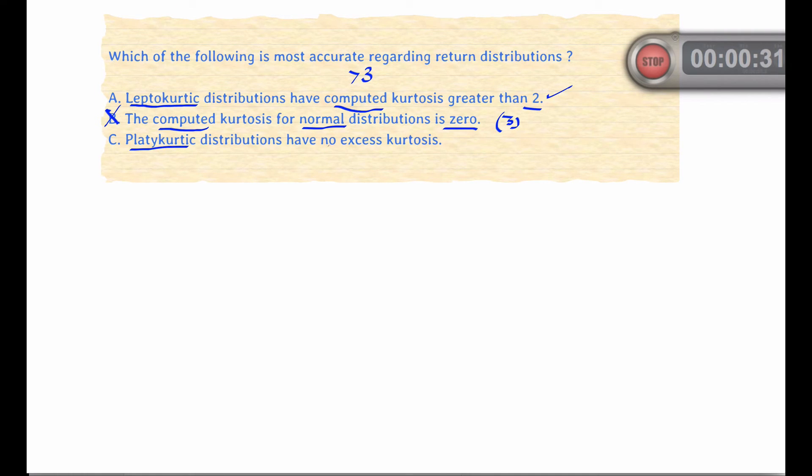And platykurtic distributions do have excess kurtosis, it's just less than 0. Now, as we discussed earlier, normal distributions have a computed kurtosis of 3. Excess kurtosis is in relation to this level. So C is incorrect as well, which makes A the correct answer.